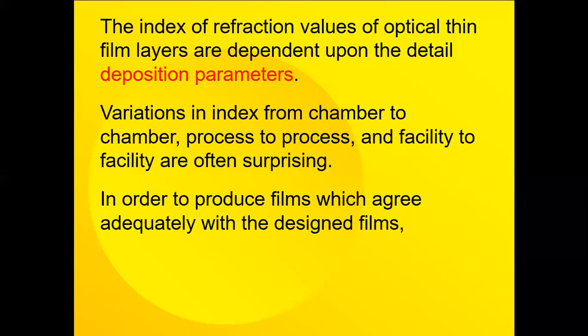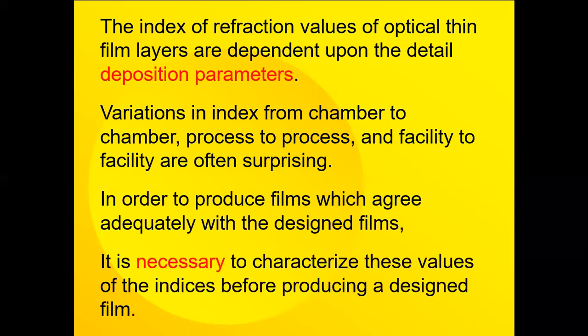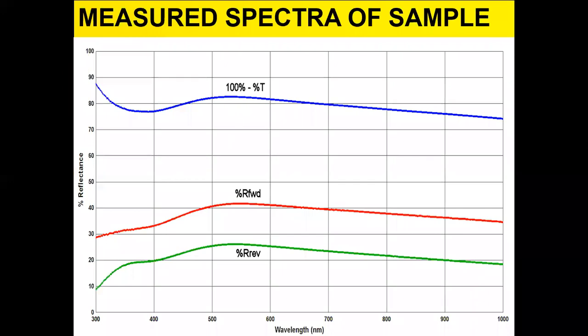In order to produce films which agree adequately with the design films, it's necessary to characterize these values of the indices before producing a design. Here's an example of typical three spectral curves that we take to derive the N and K: the normal transmission, the normal reflection or near normal incidence, and the reflection of the sample when turned around and measured from the backside or the reverse direction.